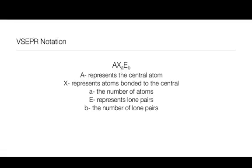The X is going to represent how many atoms are bonded to that central atom, and the subscript on X is going to represent that number of atoms. E is going to represent the number of lone pairs on the central atom, and the subscript on E is going to represent how many of those lone pairs you have.